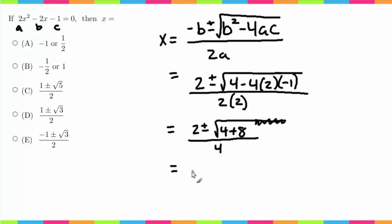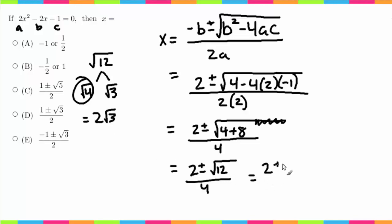Now I'm left with 2 plus or minus square root of 12 over 4. Now simplifying this, the square root of 12 breaks down to the square root of 4 times the square root of 3, and this is just 2, so this equals 2√3.